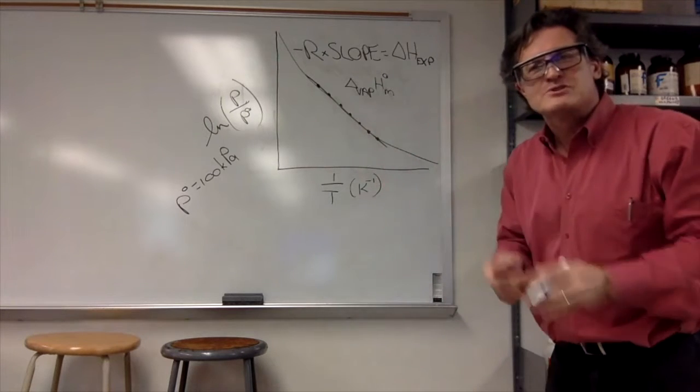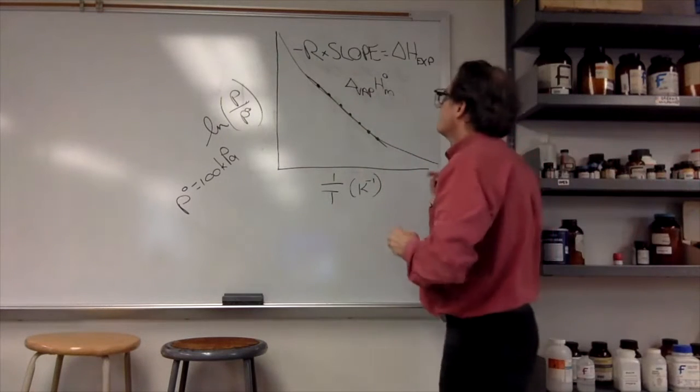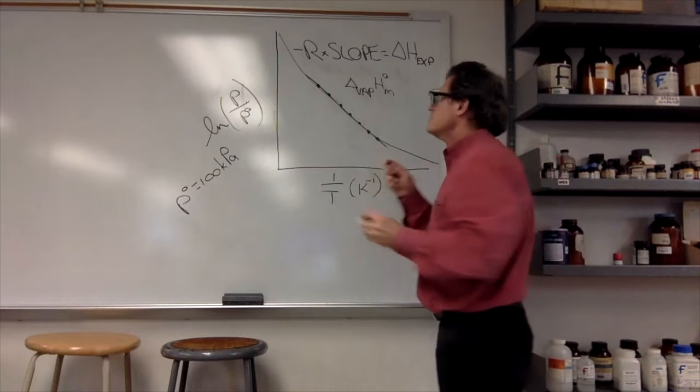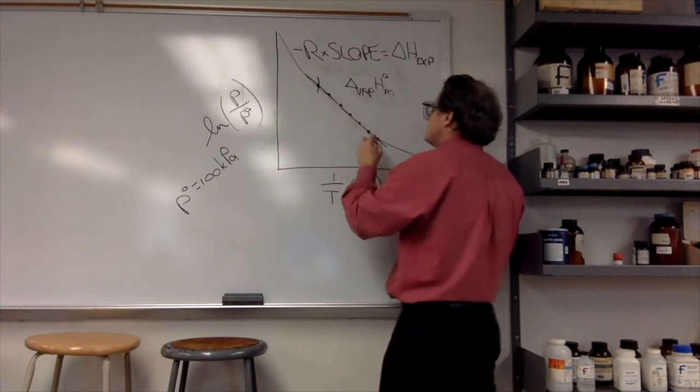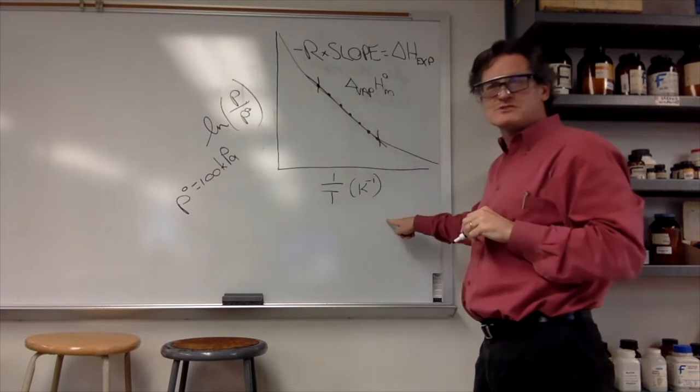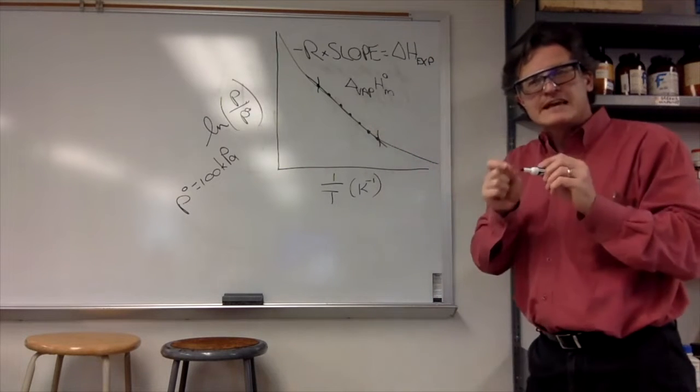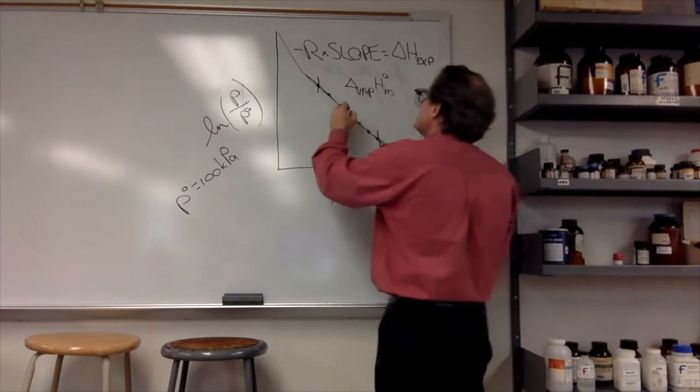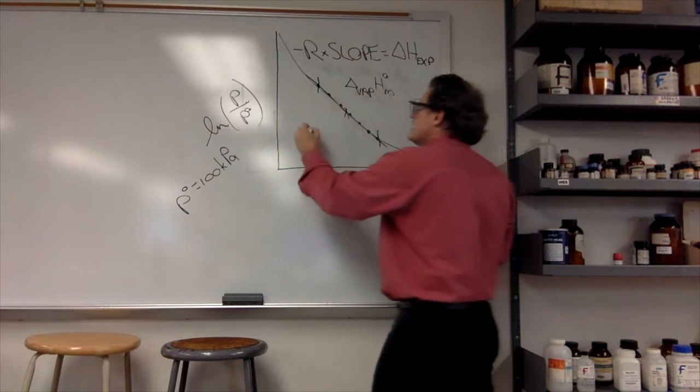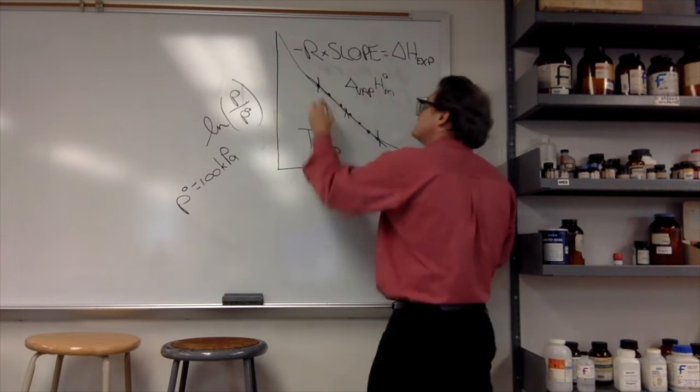We measured it over a certain temperature range, and that's where our value pertains to. We have an upper temperature, we have a lower temperature, and the place that our data is most appropriate for is right in the middle.